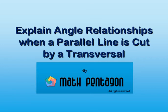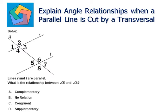Today we are going to learn about explaining the angle relationships when a parallel line is cut by a transversal. Let's look at a problem solve. We have lines R and T cut by a transversal Q, and the angles formed are 1, 2, 3, 4, 5, 6, 7, and 8. It is given that lines R and T are parallel.